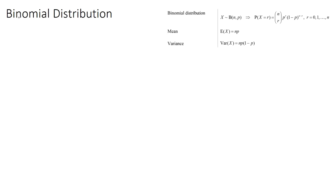What we're looking for in a binomial distribution question is firstly they're going to give you some probabilities and also a number of trials. As soon as you see a number of trials and some probability, we know that it's a binomial distribution question.